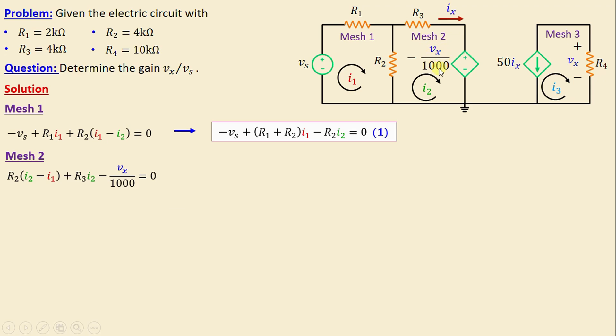If we continue simplifying this equation, we obtain negative Vs plus R2 I2 minus Vs plus R3 I2 minus Vx over 1000 is equal to 0.